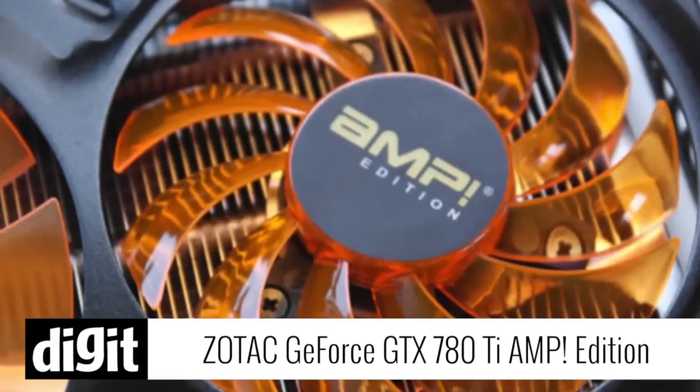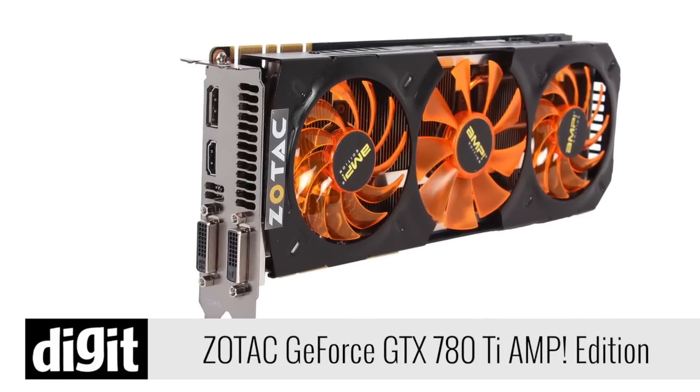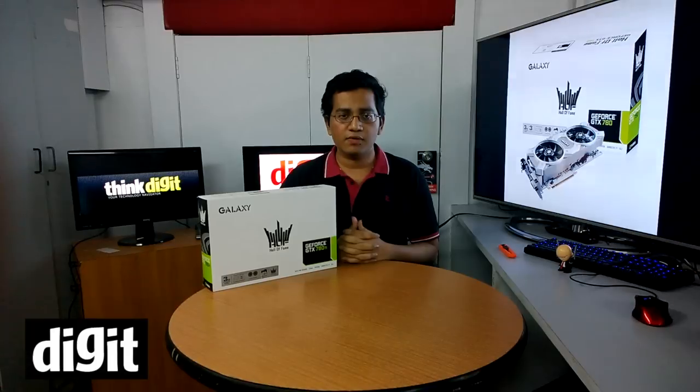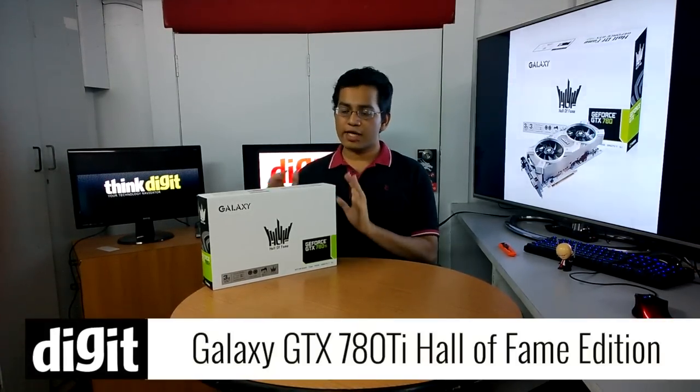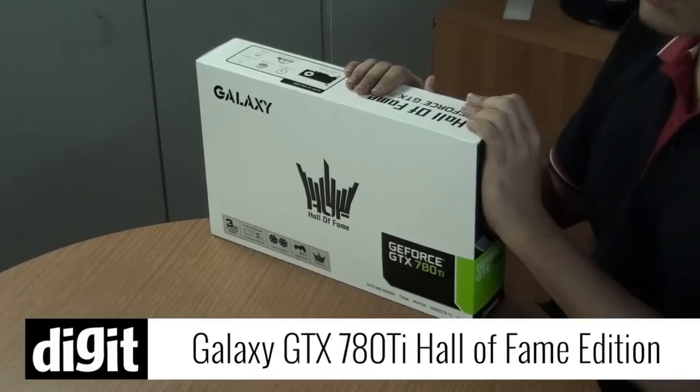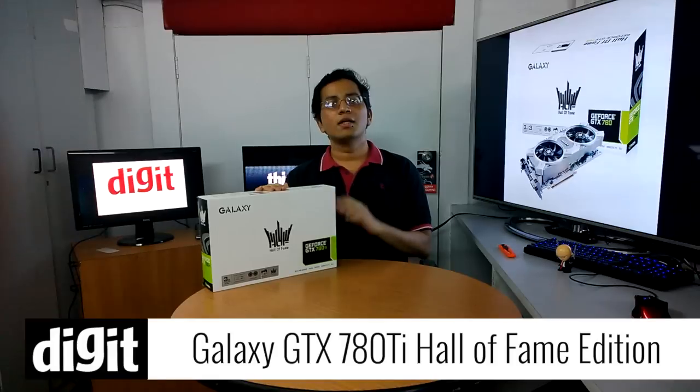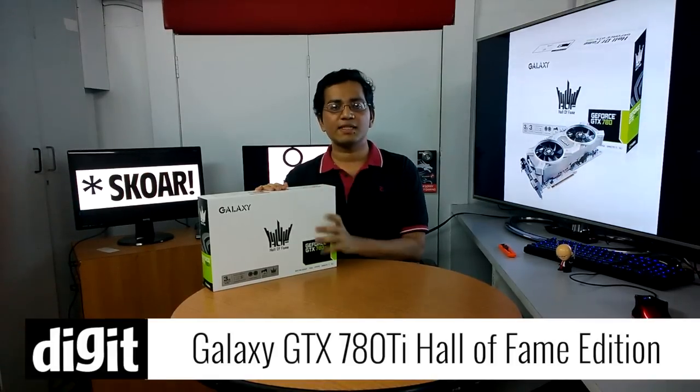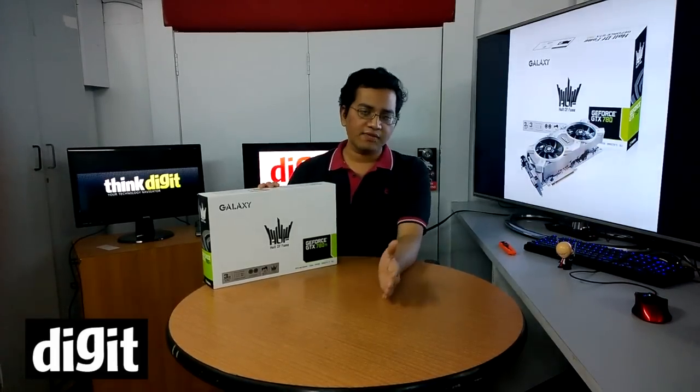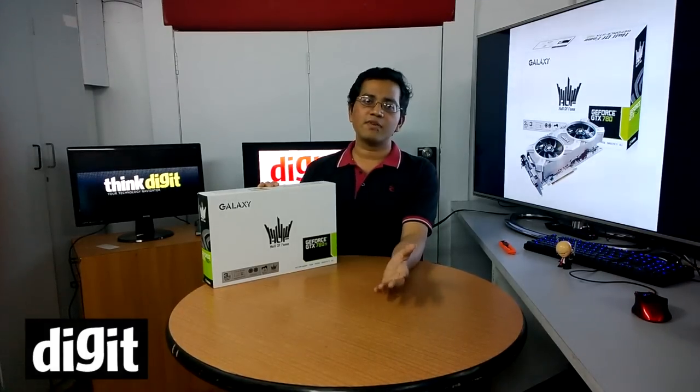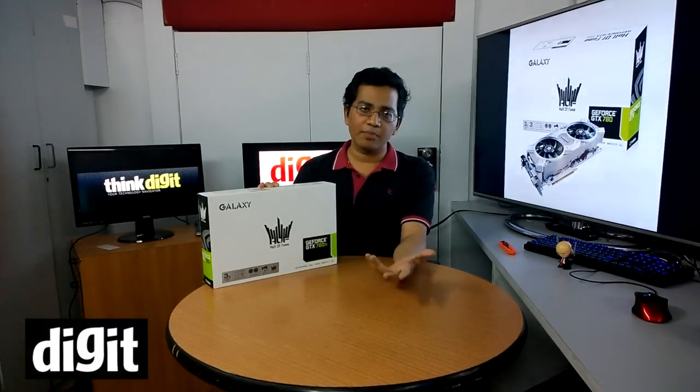It was clocked at 1006 MHz, which is way higher than a stock card clocked at 876 MHz. The card that we've got today is a Galaxy Hall of Fame Edition GTX 780 Ti. This promises to trump the previous flagship. It's clocked at 1058 MHz, which makes it 20% faster than a stock card and 5% faster than the Zotac 780 Ti Amp Edition.